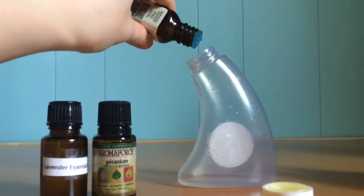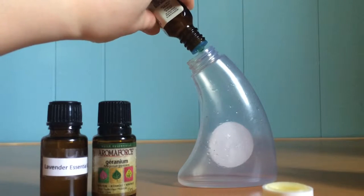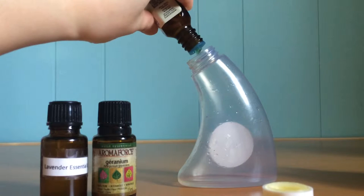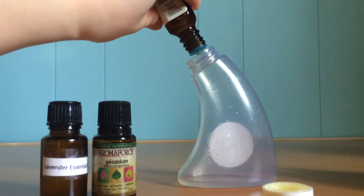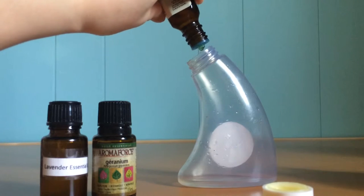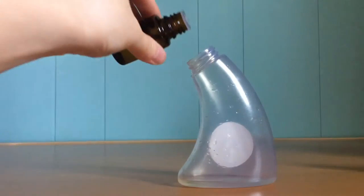Take about 20 drops of tangerine and put it in your spray bottle. You can always change the amount of essential oil you put in. I just think that geranium and lavender are a bit stronger than the tangerine, so I put more tangerine. Add 10 drops of geranium and 10 drops of lavender.